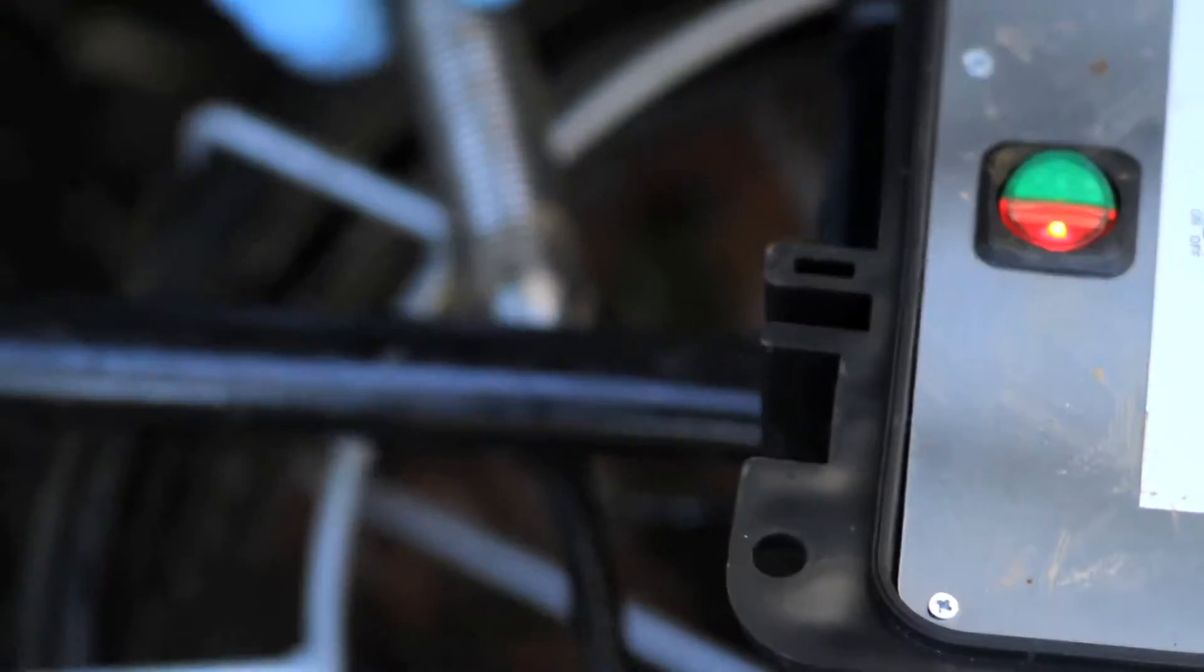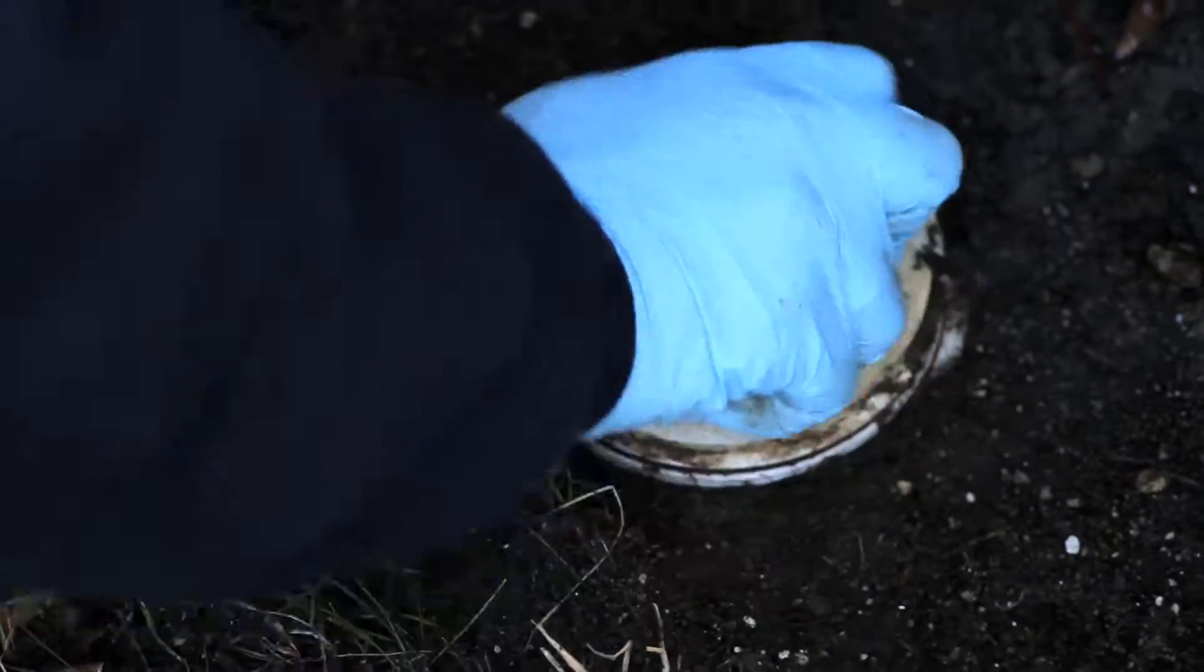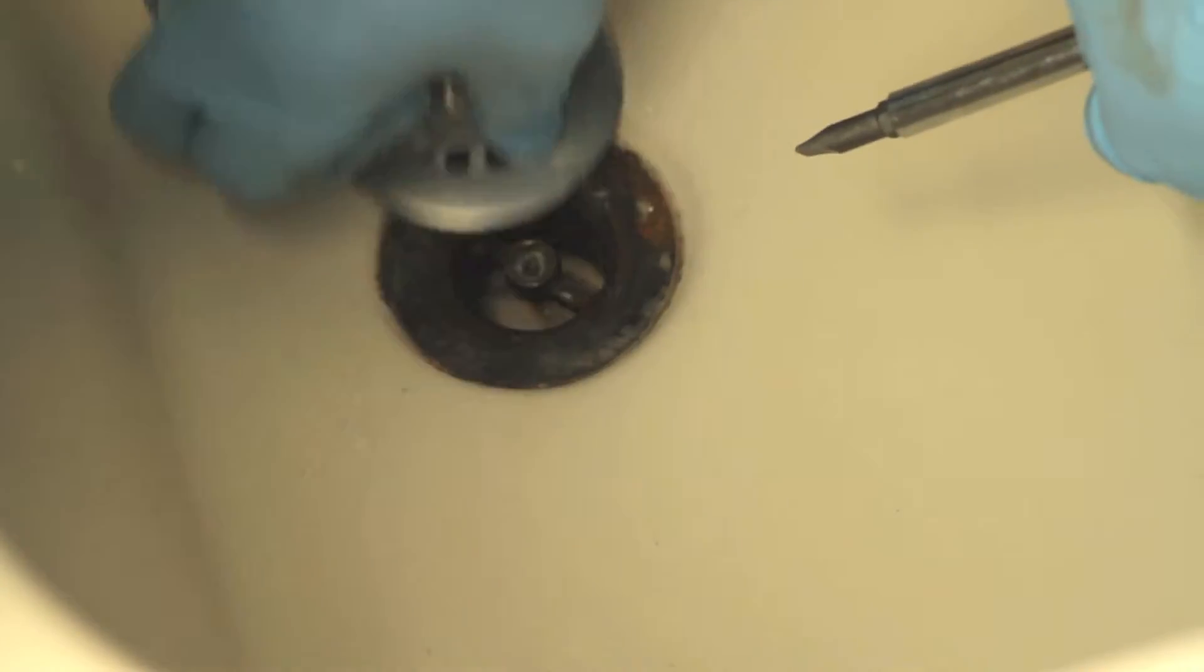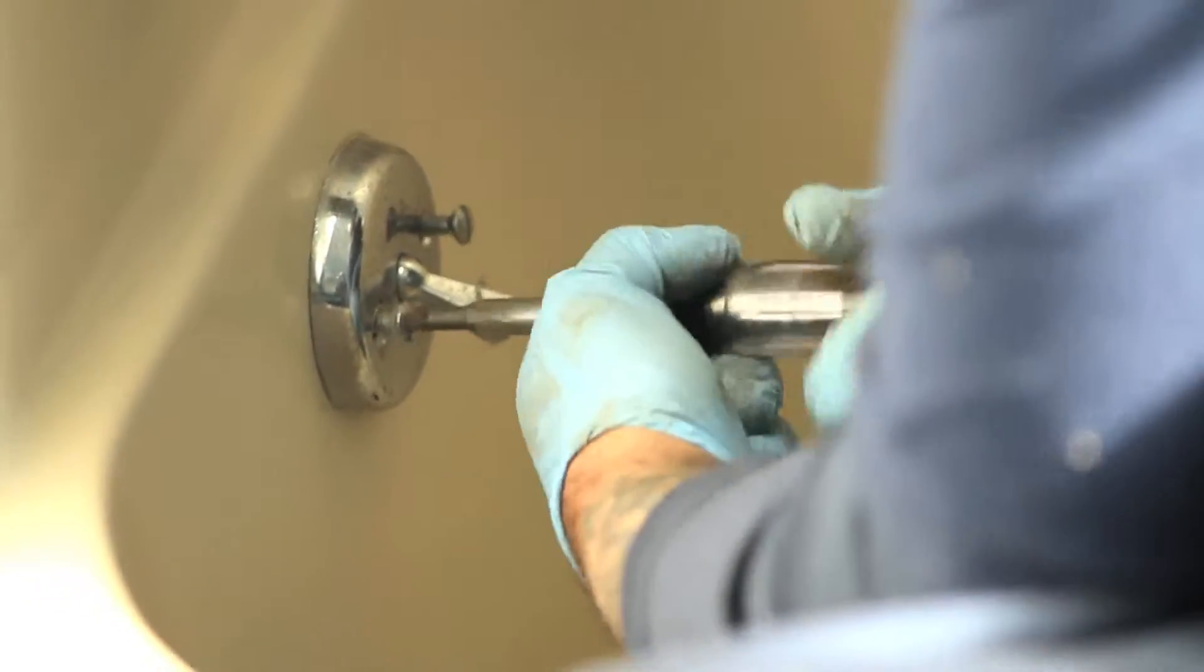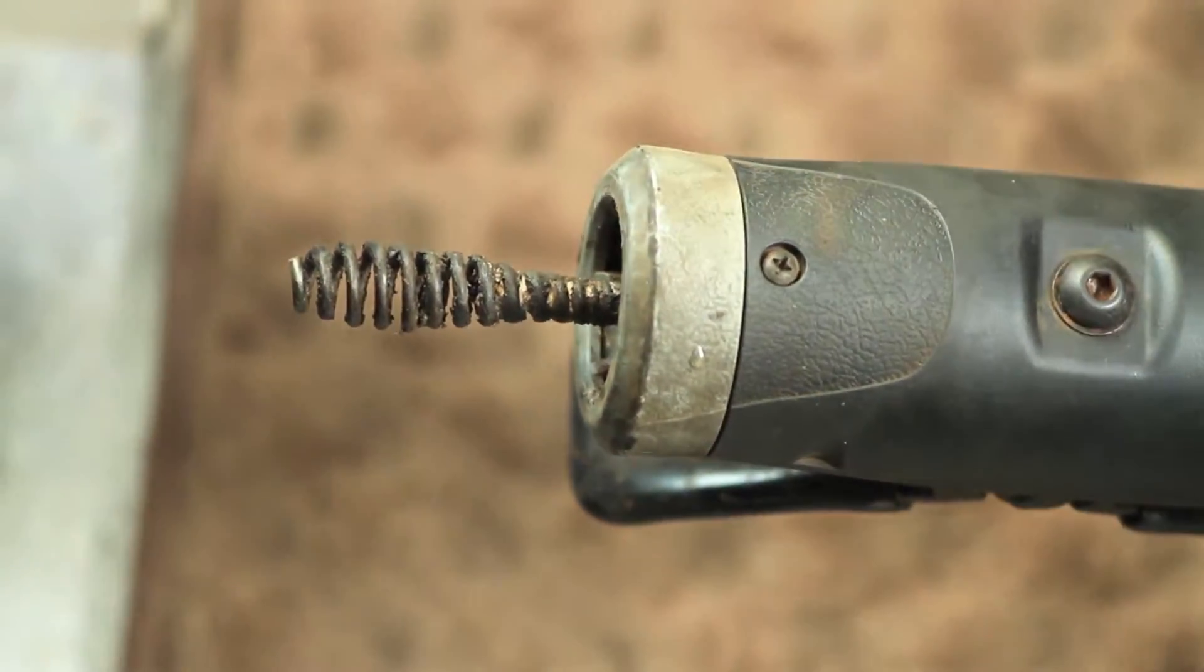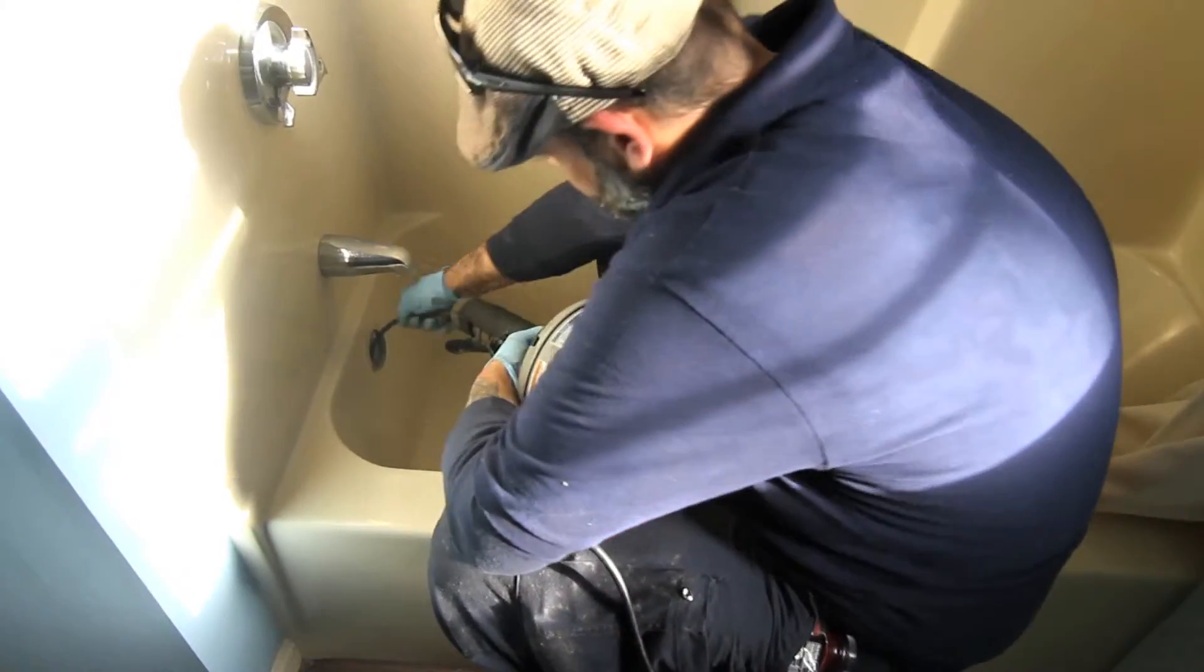We also have a high-pressure hydrojet used for tough clogs and cleaning the inside of the pipes. We have all different size cable machines. We have machines to do three to six-inch lines. We have machines to do two to four-inch lines, and we have smaller machines to do sinks and tubs.